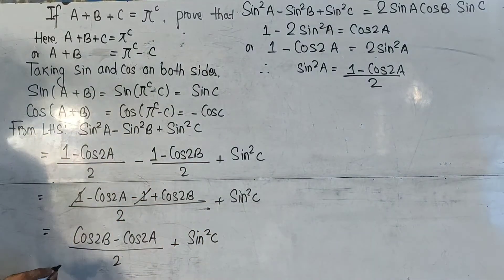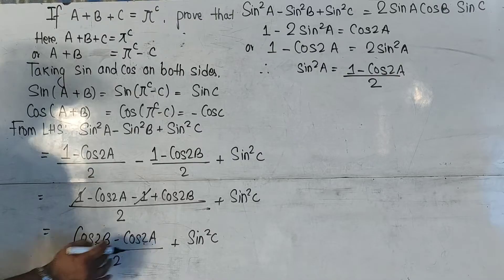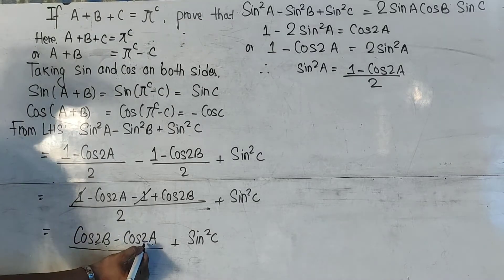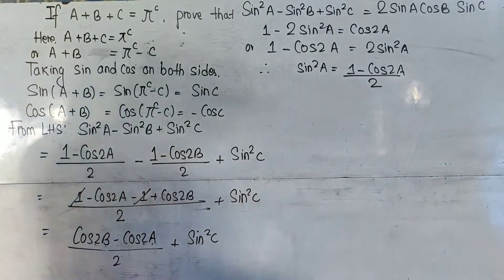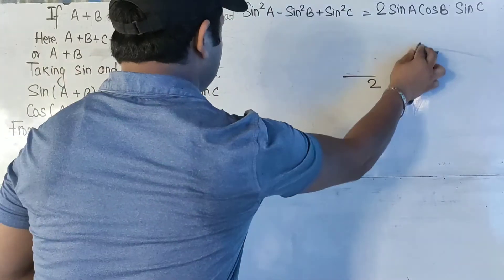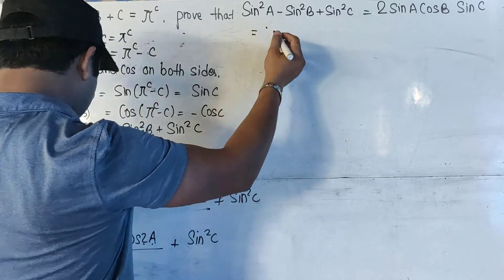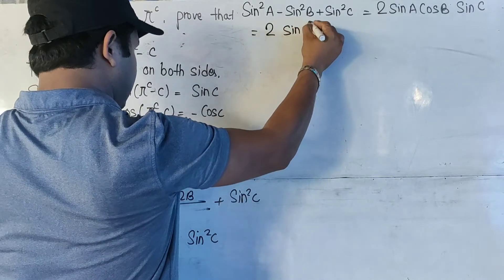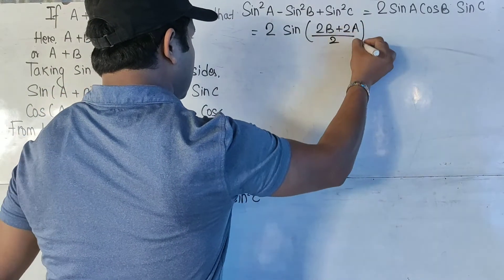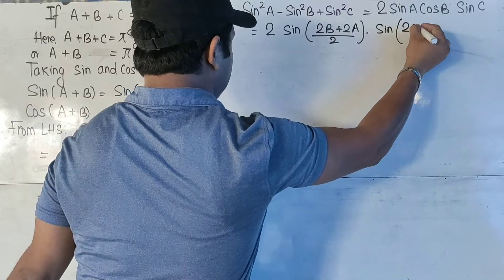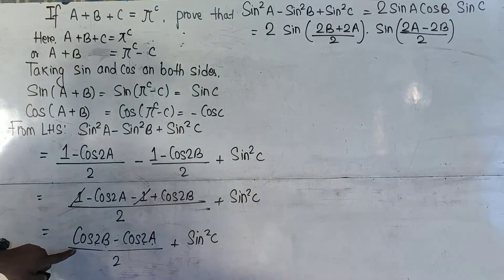The next step is to apply the formula for cosC - cosD by substituting 2B as C and 2A as D. The formula is cosC - cosD = 2·sin((C+D)/2)·sin((D-C)/2). We operate this formula on (cos2B - cos2A)/2.